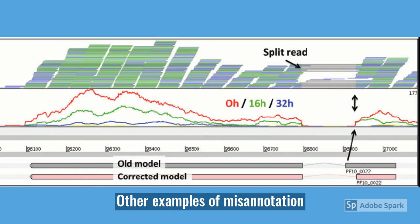There are other types of misannotation in genome annotation. For example, splice sites of genes can be considered in the wrong place compared to where they should be, as seen in the figure presented.